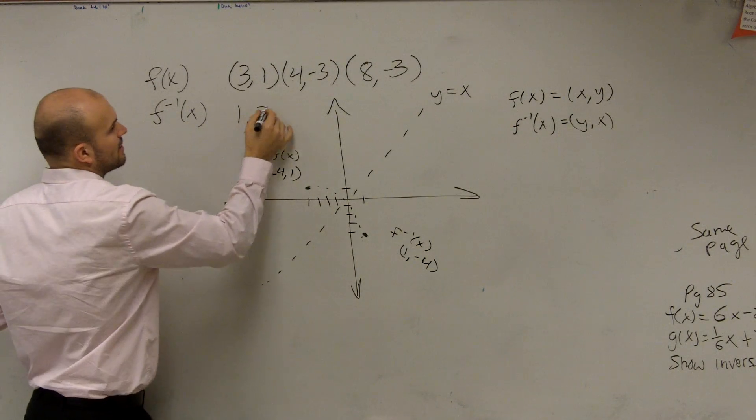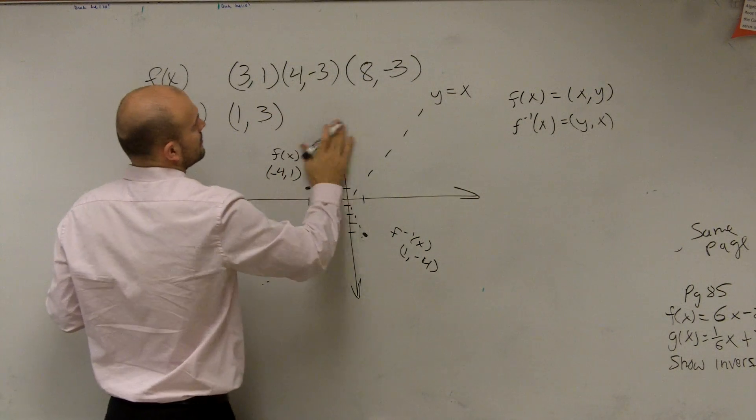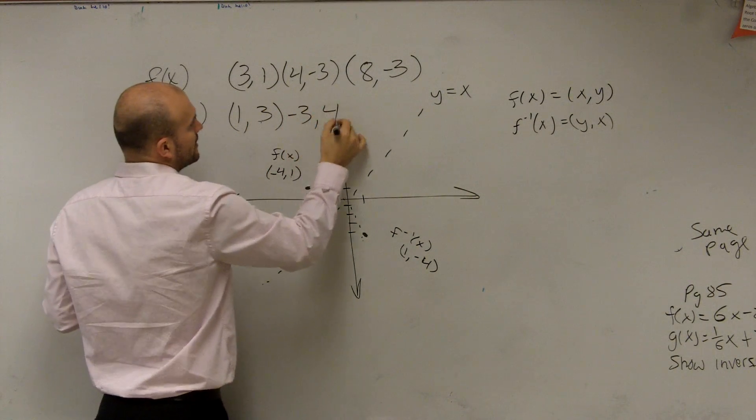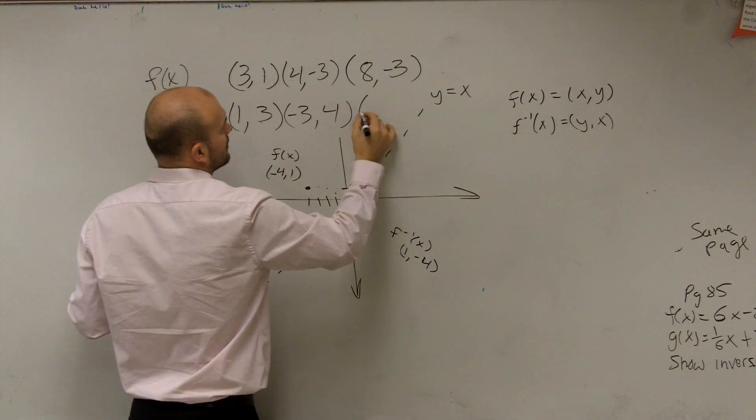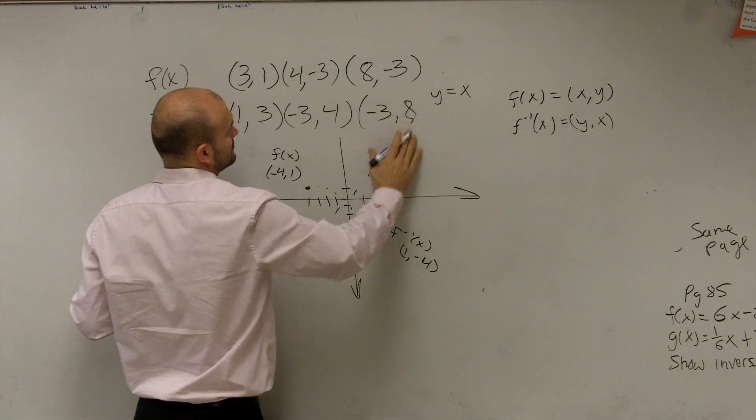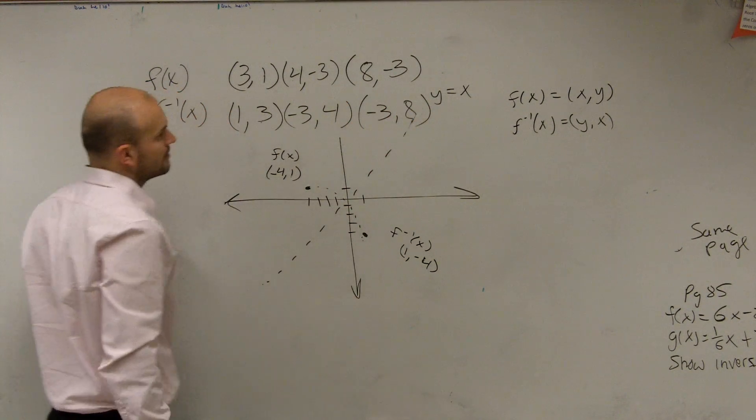So f inverse of x is going to be 1 comma 3, negative 3, 4, and negative 3, 8. But our inverse is not going to be a function.